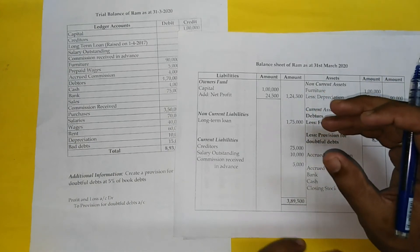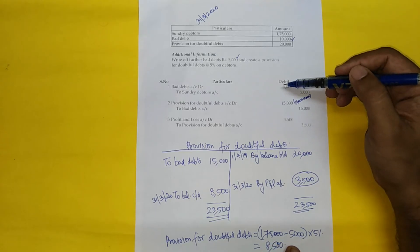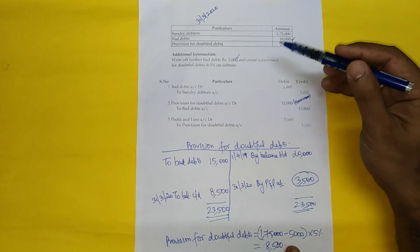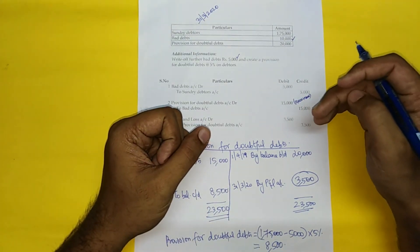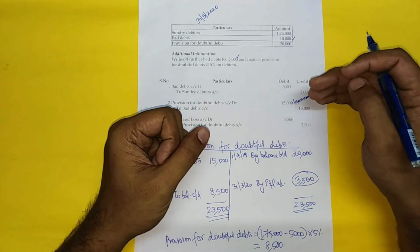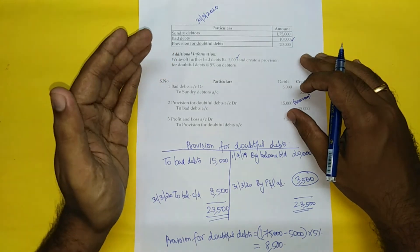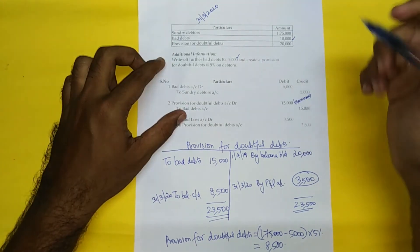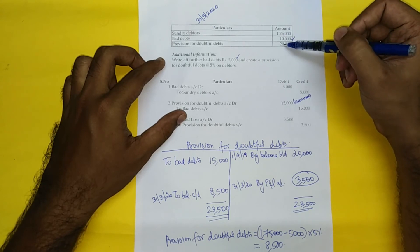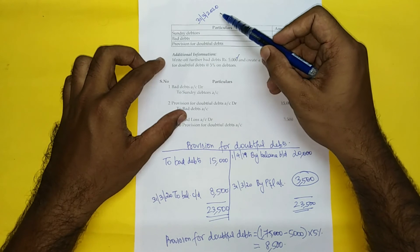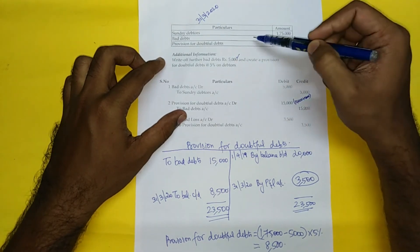We will now work through another illustration involving both bad debts and provision for bad and doubtful debts together. This is our trial balance extract as at 31st March 2021. The sundry debtors balance is given, bad debts are ₹10,000, and the provision for doubtful debts is ₹20,000.